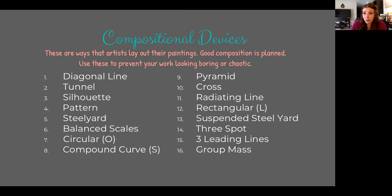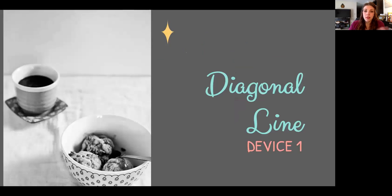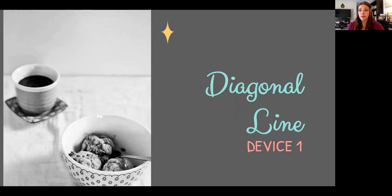There they are again — the compositional devices. Hopefully you wrote them down in the last video. If you skipped it, pause right here and on the last page of the handout, write in the small bar above each box the 16 different compositional devices in order. I'm going to show you a slide on each one — it'll say the name of the device and then there will be an image, maybe two, showing that compositional device being used. Some of the images are photographs, some are sketches, some are finished paintings, so you can see it used several different ways.